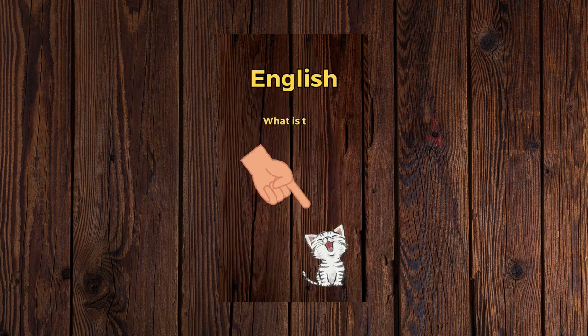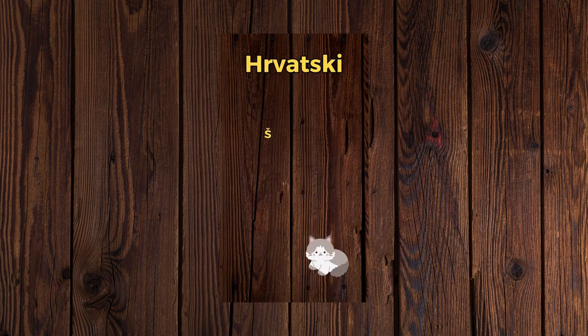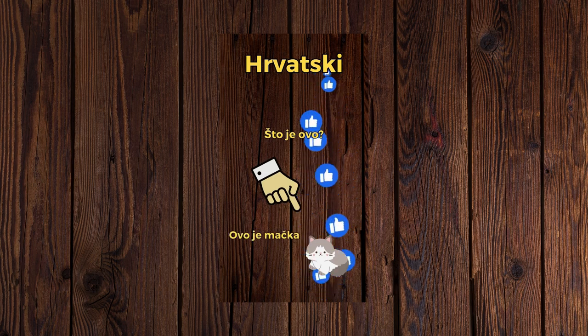What is this? This is a cat. Sto je ovo? Ovo je mačka.